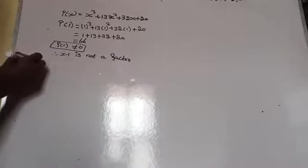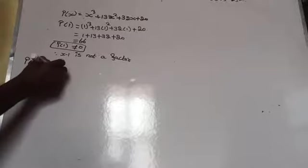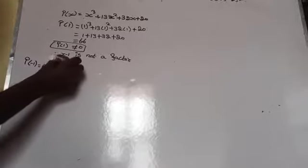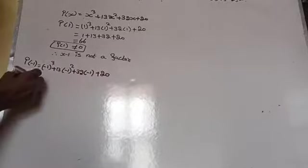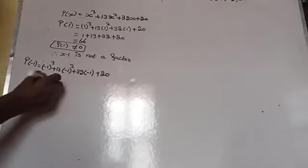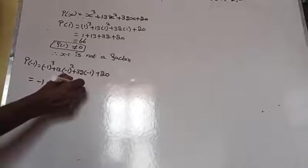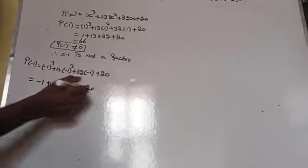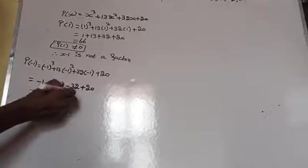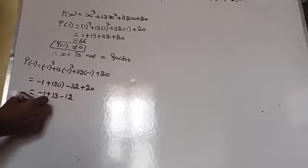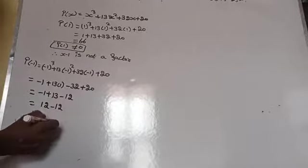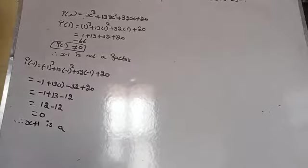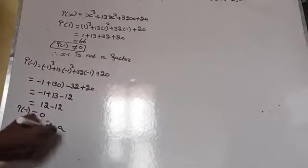Now check P(-1). P(-1) = (-1)³ + 13(-1)² + 32(-1) + 20 = -1 + 13 - 32 + 20. That is -1 + 13 = 12, then 12 - 32 + 20 = 0. So P(-1) = 0, therefore (x + 1) is a factor.